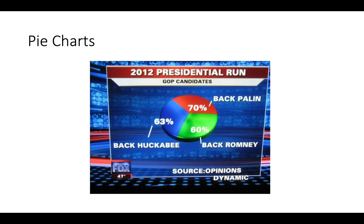This other pie chart is even worse. The percentages don't add up to 100% — they add up to 193%. This was from the 2012 presidential election showing Republican candidate support. The split occurs because some people supported more than one candidate, but you should never do this in a pie chart. A pie chart represents a whole, so values should never exceed 100%. If you have data like this, represent it in a bar chart instead.